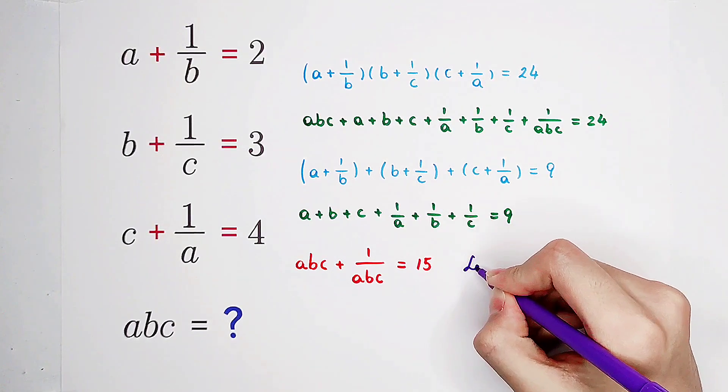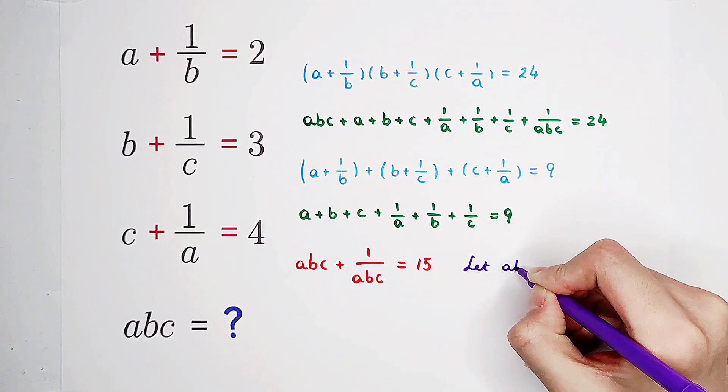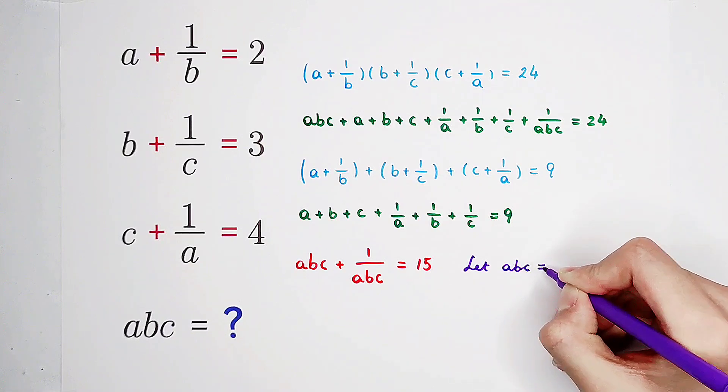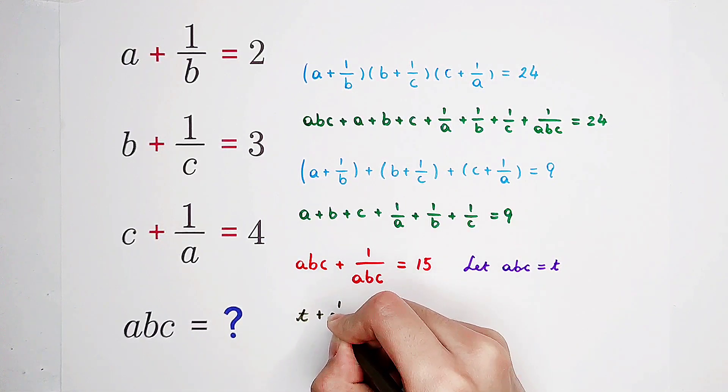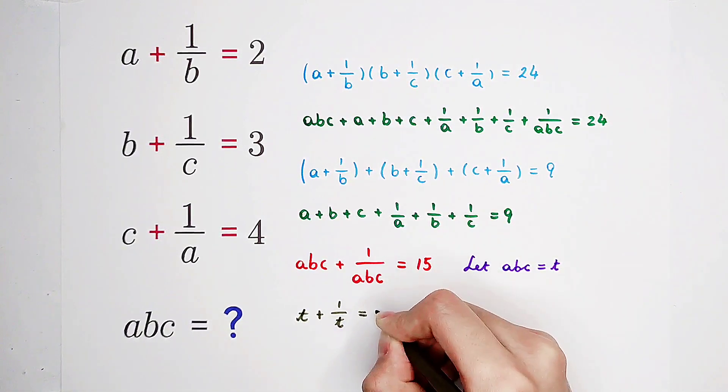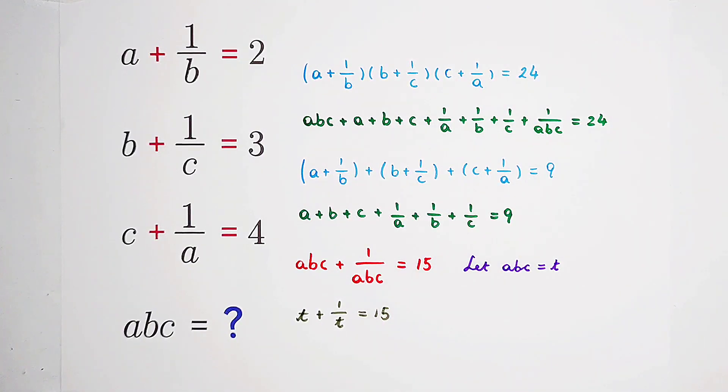If we let a, b, c be equal to t, then the equation will be an equation about t.